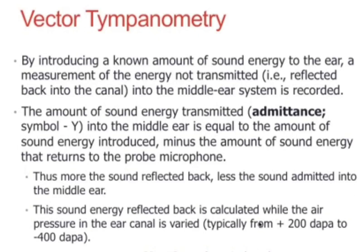In tympanometry, what we do is we give some amount of sound energy in the air and see how much sound is going inside — that is admitted — and how much is reflected back. It is not possible to measure what sound is admitted inside, but we can measure what sound is reflected back. So if we know how much sound is reflected back and subtract from the total energy supply, we indirectly get the measure of how much sound is admitted inside.